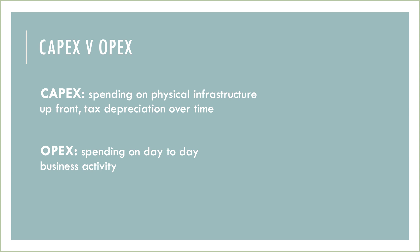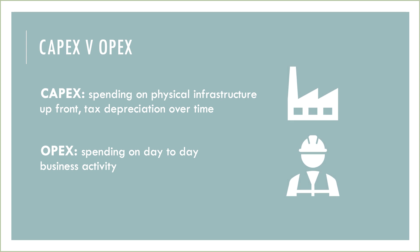Another very simplified way to think about it: if you're in the electric car industry, a capital expenditure would be the factory that builds the vehicles, and an operational expenditure would be the people who build the vehicles and work in the factory. You need to pay salaries day-to-day, but you only need to build the building and assembly line one time. That's the difference between CapEx and OpEx.